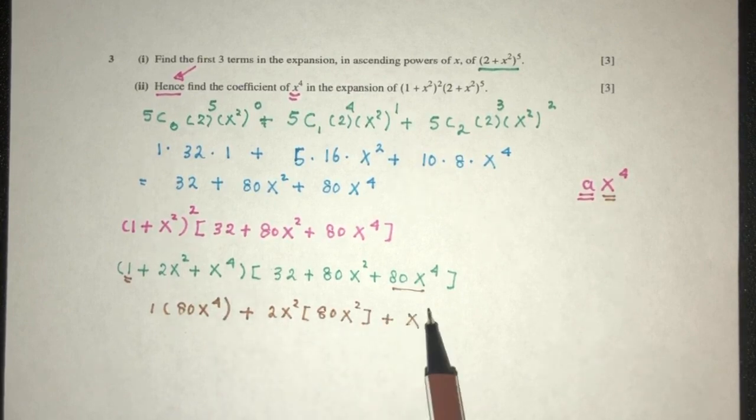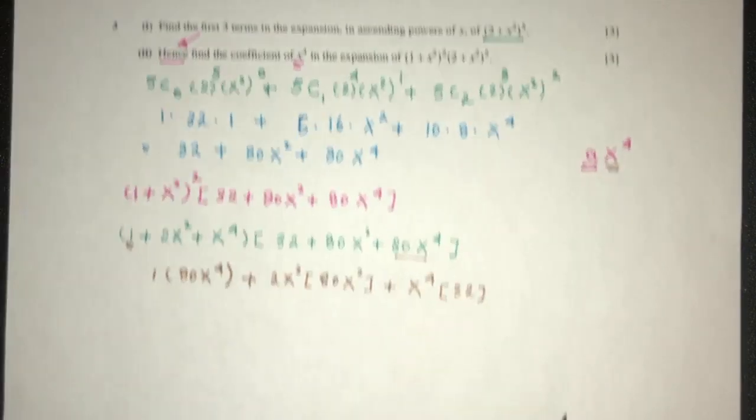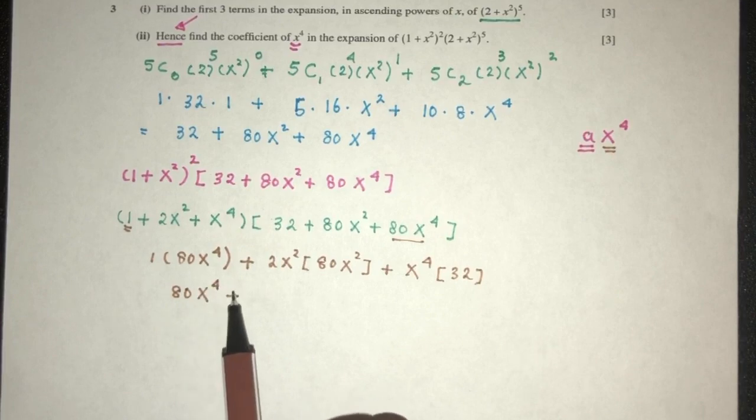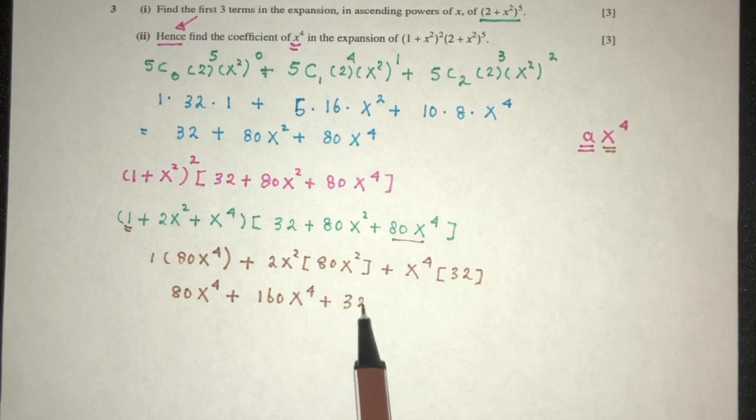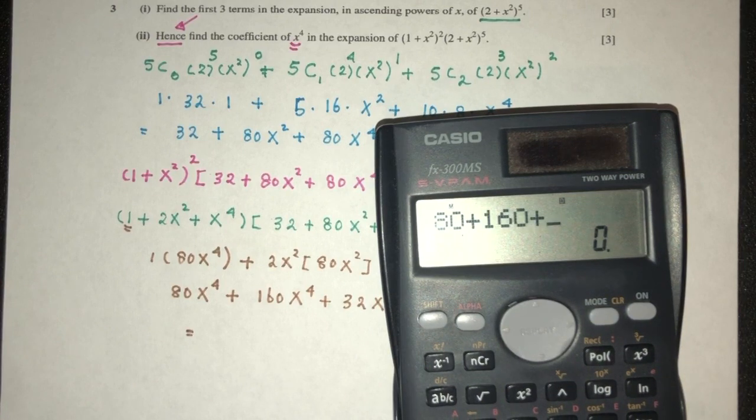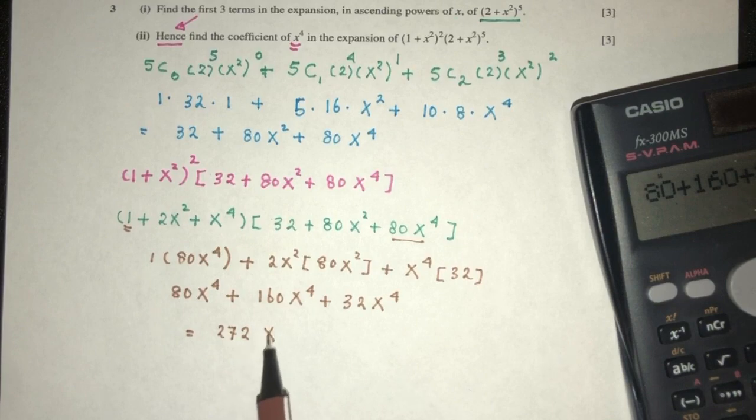And finally, we have this one. Obviously, we have to multiply by the constant value. So simplify, you will have 80 x power 4. That will be 160 x power 4 plus 32 x power 4. So simplify, 80 plus 160 plus 32. That should be 272 x power 4.